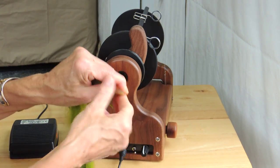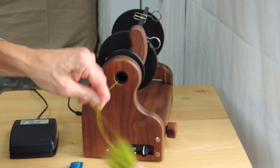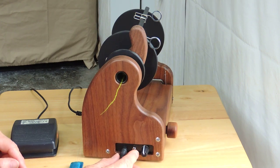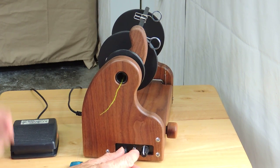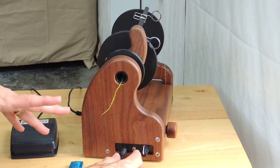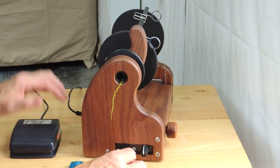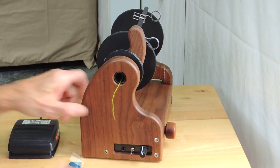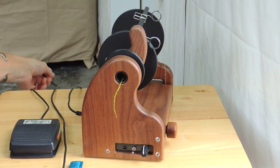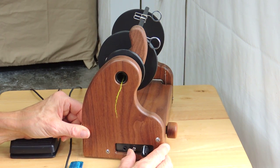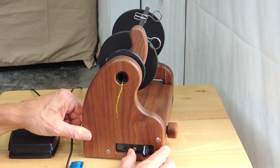One other important thing to know is the importance of using the foot switch and not just controlling the power by using the toggle switch. So if I remove the foot switch and just turn the machine on or off with the toggle you'll see a notable difference.